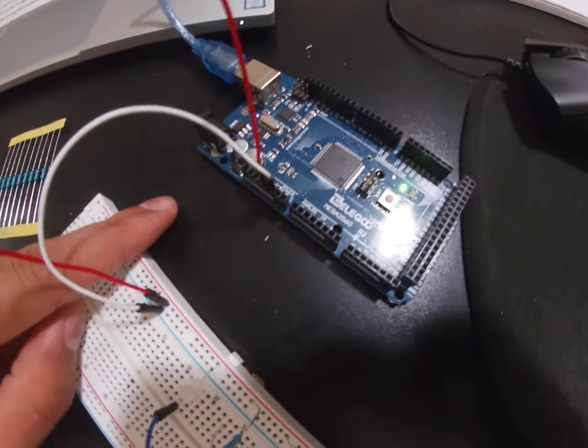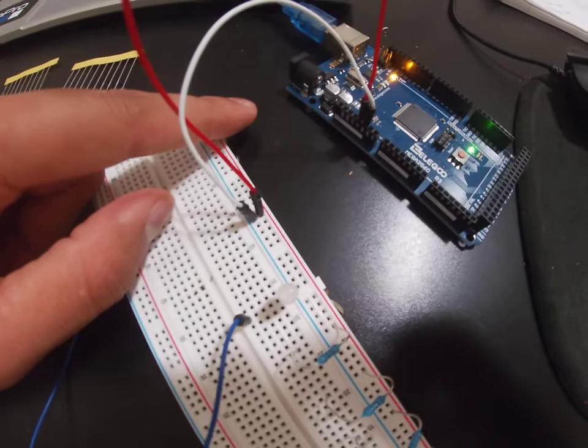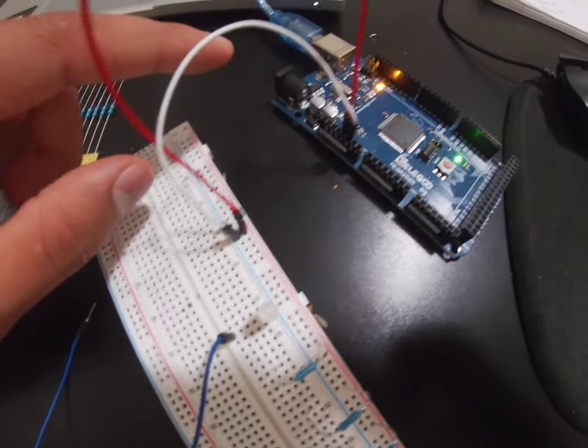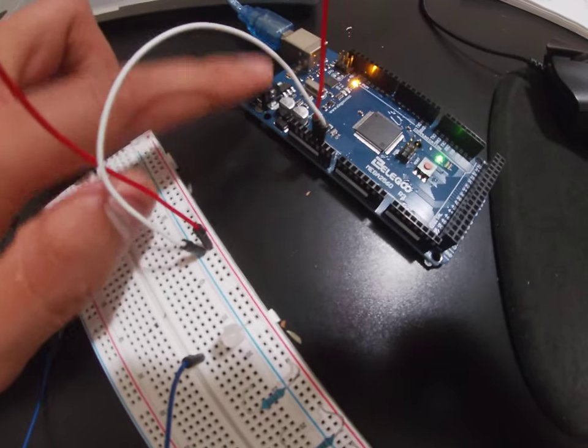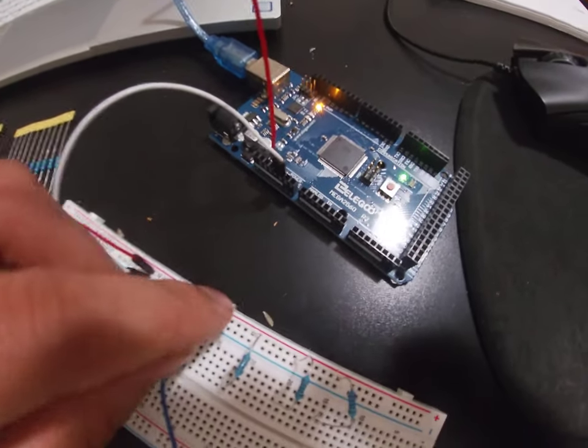Essentially what we have performed is we have secured the ground connection as well as the power coming in from the Arduino Uno to the breadboard.